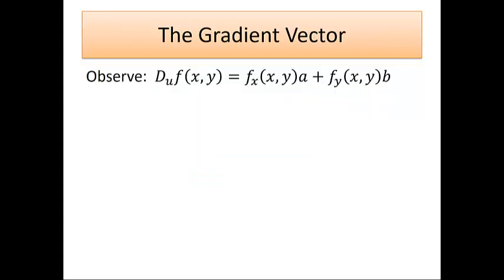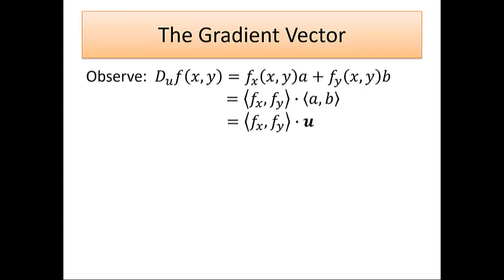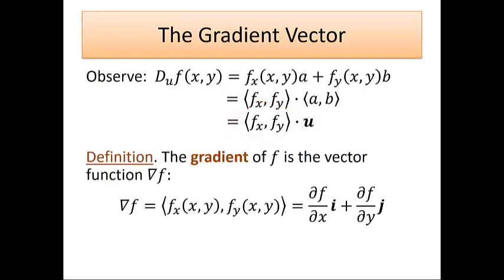We notice that this formula can be thought of as a dot product — the dot product of a vector whose components are the partial derivatives with respect to x and y, with the vector (a, b), which is of course the vector u, the direction we are traveling in. This vector whose components are the partial derivatives of f turns out to be a really important vector in calculus. It's called the gradient vector.